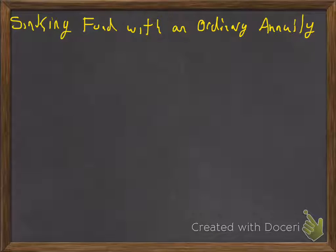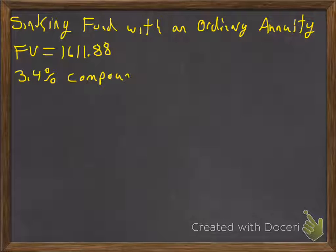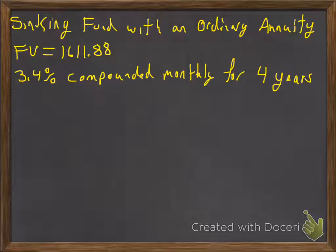Let's say, for example, we would like to have a future value of $1,611.88, and the account has 3.4% interest compounded monthly. We would like to meet this financial goal in four years.